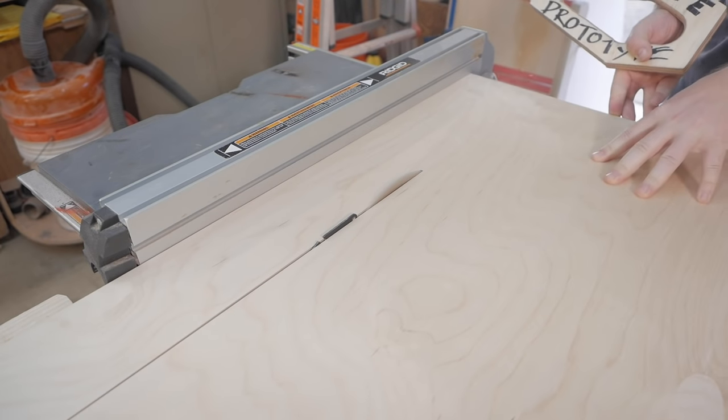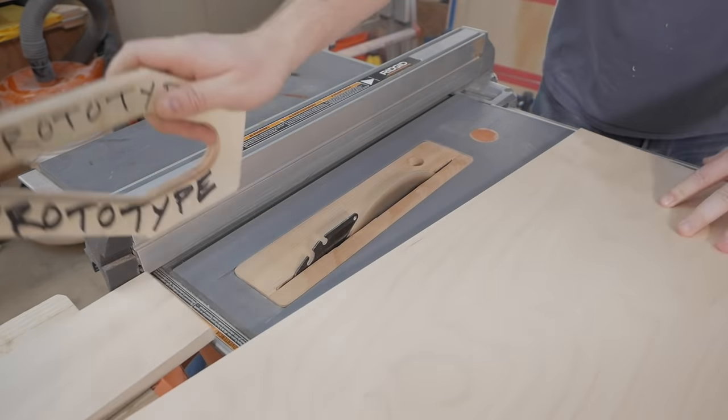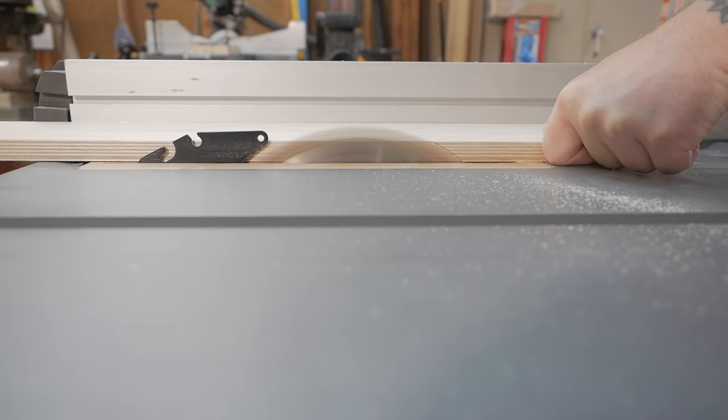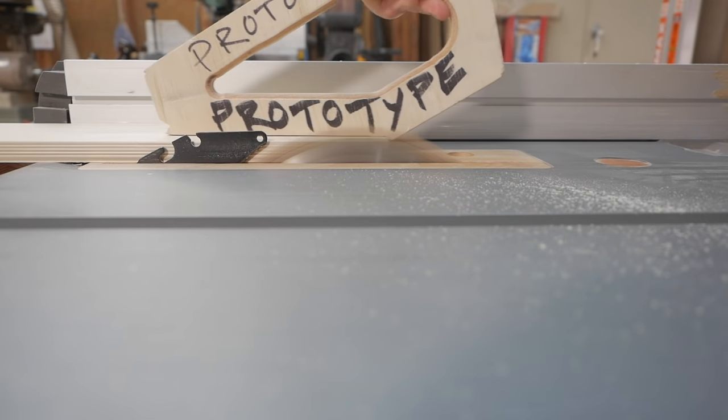The build starts by ripping a strip of 5 eighths inch or 15 millimeter Baltic birch at the table saw a little wider than needed before slowly sneaking up to the final width, which I check with a set of digital calipers. I'm looking for a variation tolerance of about five thousandths of an inch or so.